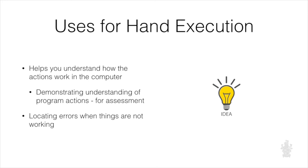Another thing we can do with hand execution is locate errors. Sometimes — quite frequently, I think — the code that we write has small mistakes in it, obviously unintentional. We write it thinking it's going to do what we want, but when we run it, the computer doesn't do what we want, which is very frustrating. What we need to do then is look at our code — the computer's done exactly what we told it to do. So the problem is our problem; we made a mistake. We need to think about what does the code actually do? Hand executing gives you a way of going through the code and saying: I know I wanted it to do this, but it's doing something else — why? And you can look at your code and work out where your errors are.